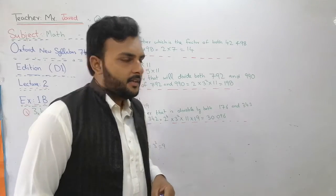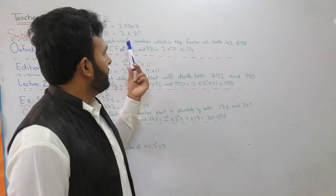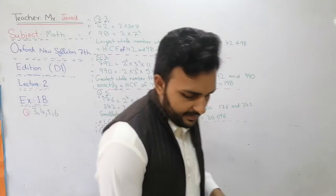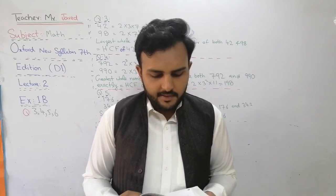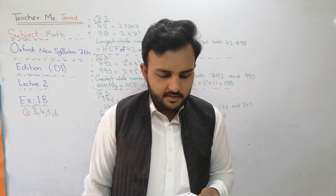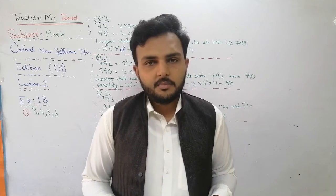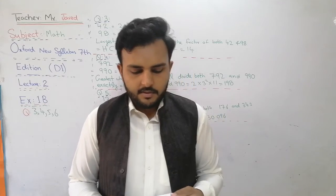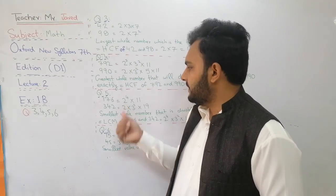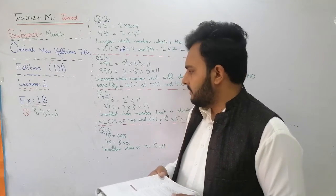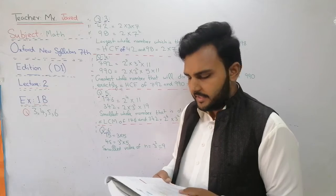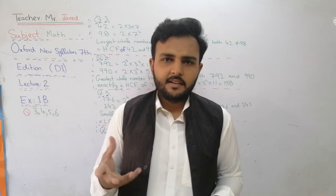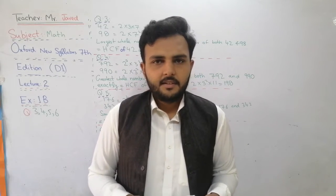When the question demands the smallest, least, or lowest, then we find the LCM. When it demands the greatest, we find the HCF. In question number 5, the numbers 176 and 342 are written as the product of their prime factors: 176 = 2⁴ × 11, and 342 = 2 × 3² × 19. The basic logic is already given, so no confusion.